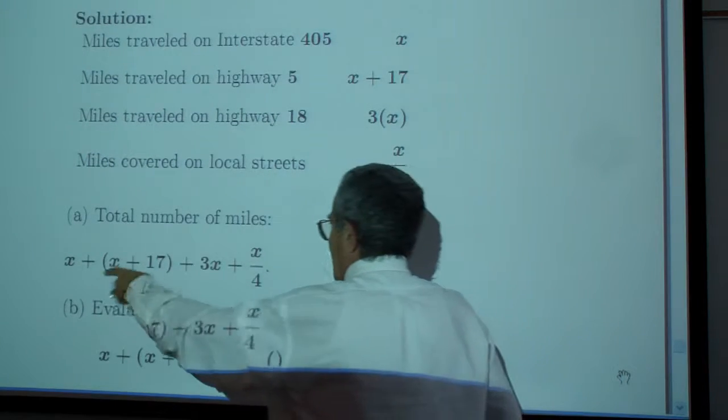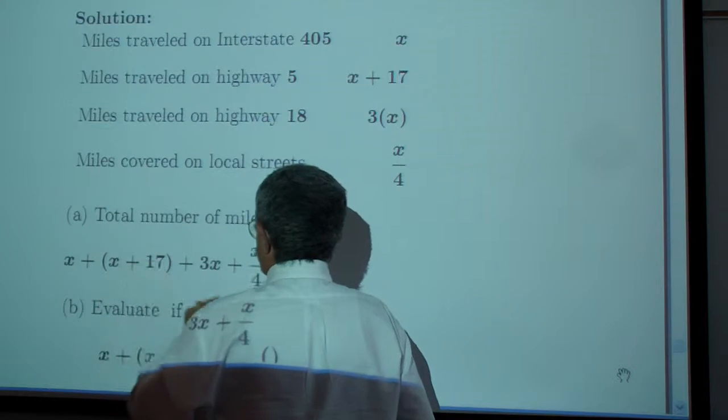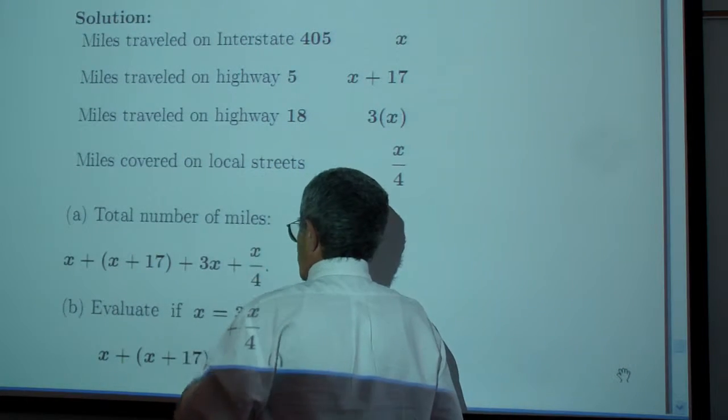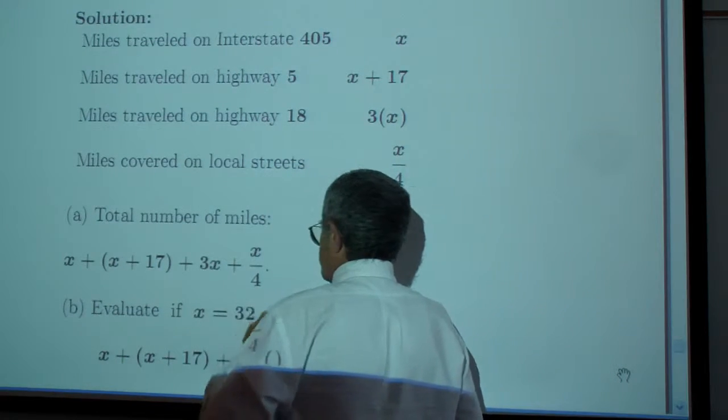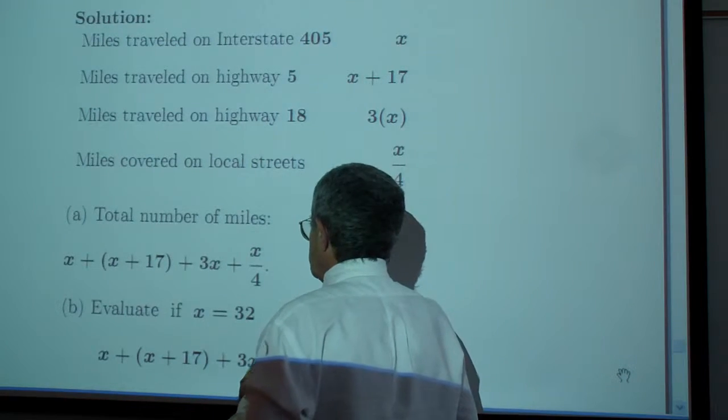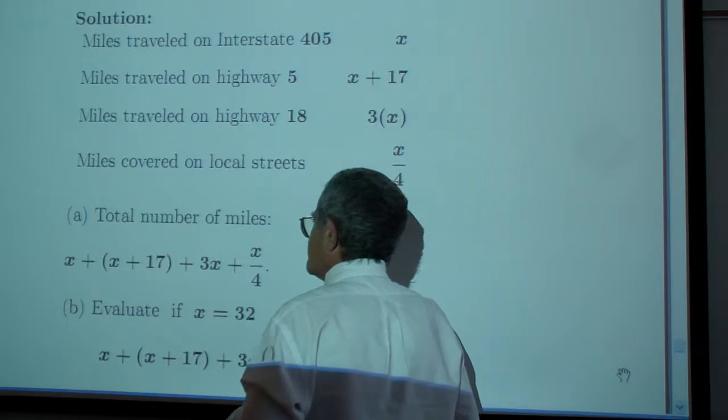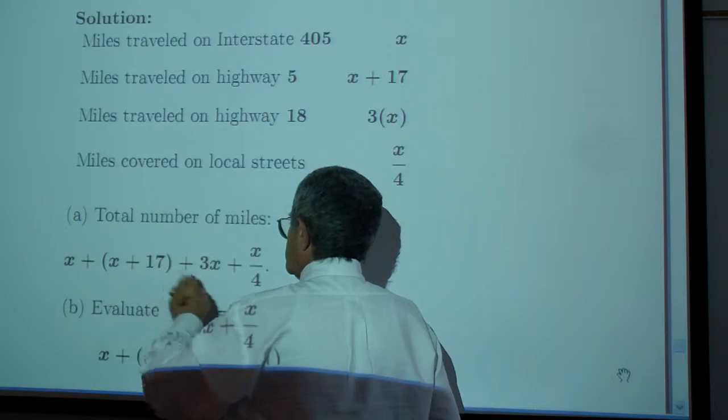I could have added these. I would have gotten 5x plus x over 4, that looks like 21x over 4, plus plainly 17.